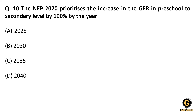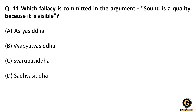NEP 2020 prioritizes increasing the Gross Enrollment Ratio from preschool to secondary school level to 100 percent. This means if 10 students enroll in preschool, all 10 should progress to primary and then to secondary school to achieve a GER of 100%. According to NEP 2020, this target should be achieved by the year 2030.